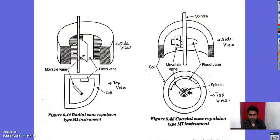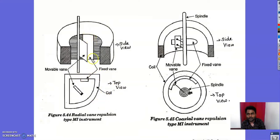Looking at the diagram of the radial vane type, it shows the side view and top view of the radial vane repulsion type moving iron instrument. It has a movable vane and a fixed vane attached to the coil. The movable vane is connected to the spindle, which is connected to the pointer. The two vanes are placed radially, which is why it is called a radial vane repulsion type MI instrument.